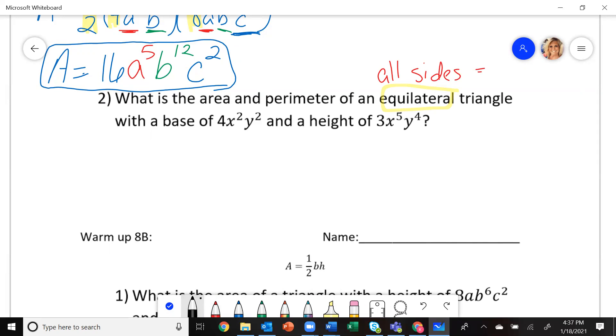So let's draw a picture of what we have. Here's my triangle. It says my base is going to be 4X squared, Y squared. That means all of these are the same.